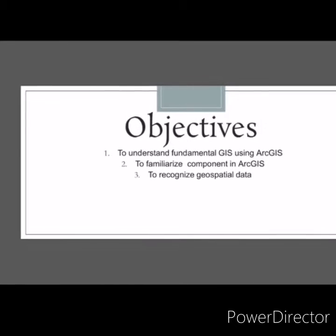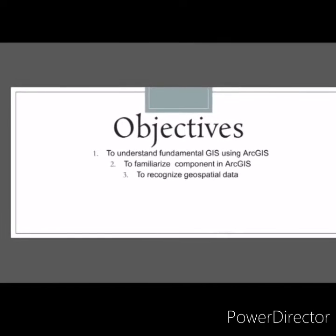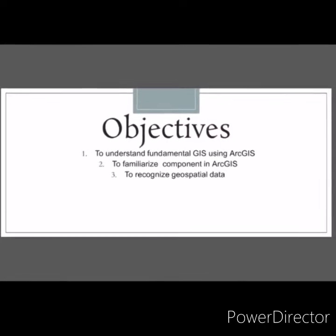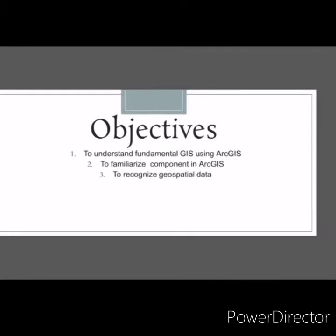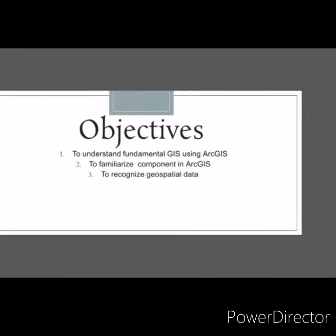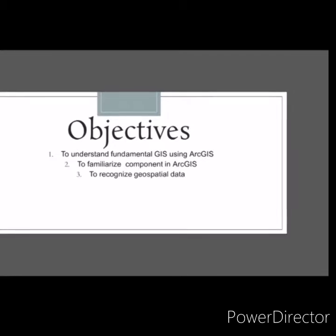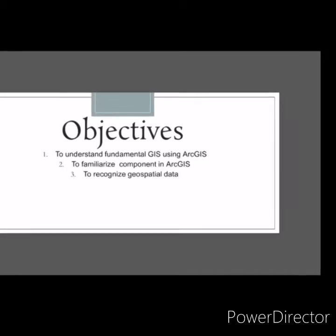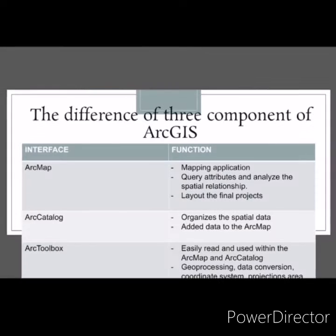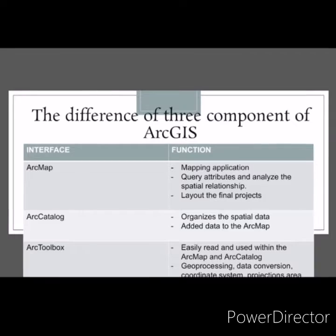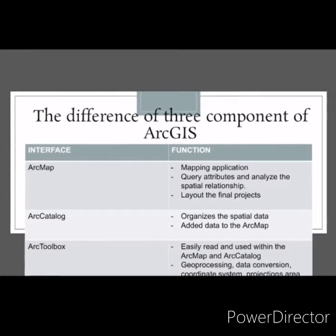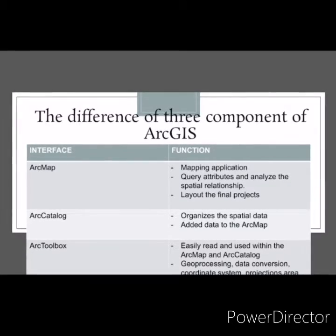The objective of this lab manual is to understand the fundamentals of GIS using ArcGIS, to familiarize the components in ArcGIS, and to recognize the geospatial data and the differences of the three components of ArcGIS.